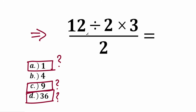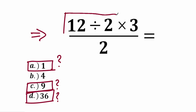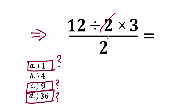Whatever order of operation we select is going to create a different answer. When we multiply 2 times 3 first, we have one answer. When we divide 12 by 2 first, we have a completely different answer. When we cancel those 2s, we get an absolutely different answer. In terms of math, the question is: what is the correct order of operations? When we know the correct order, we can confidently say which answer is absolutely correct.